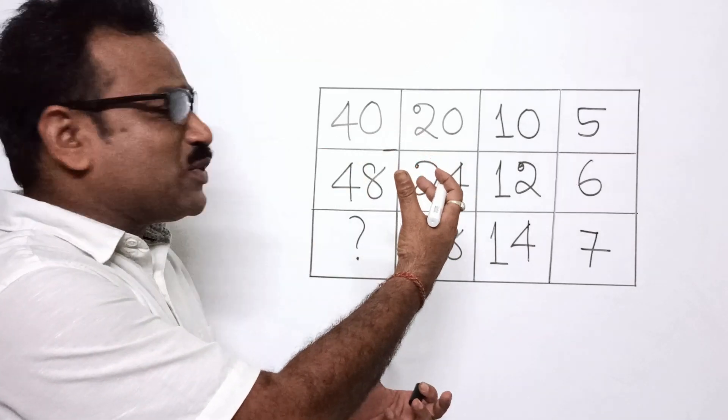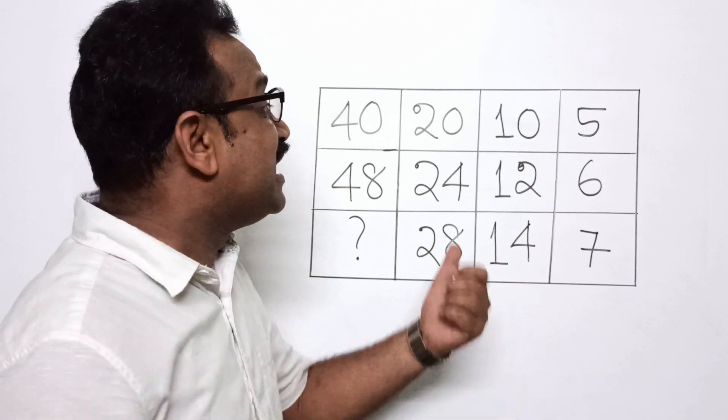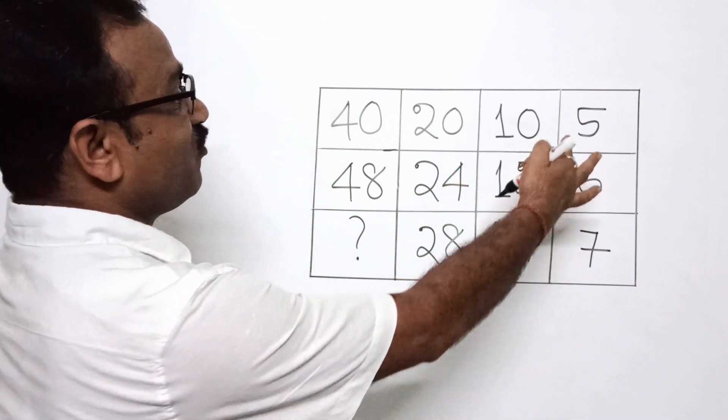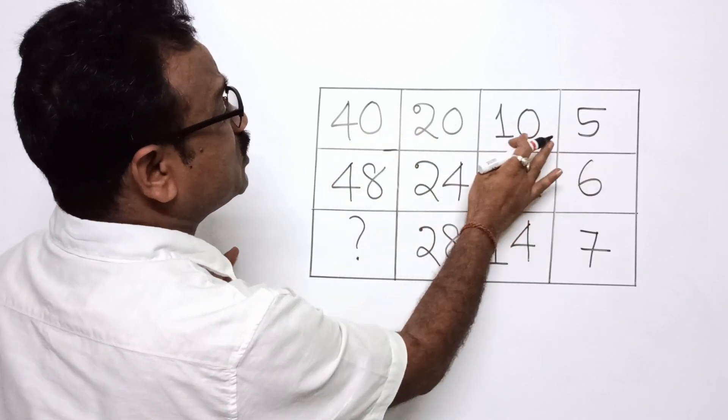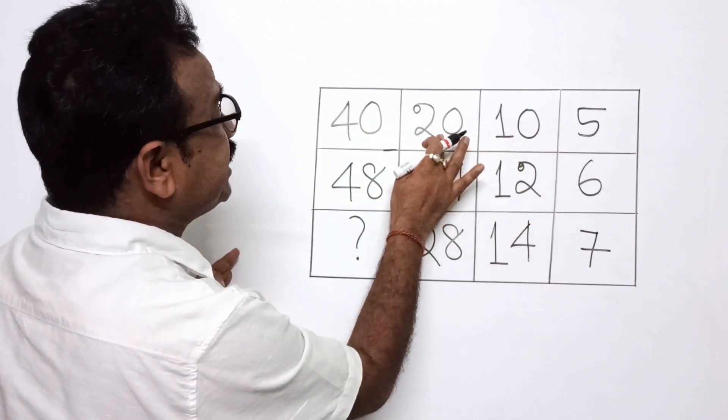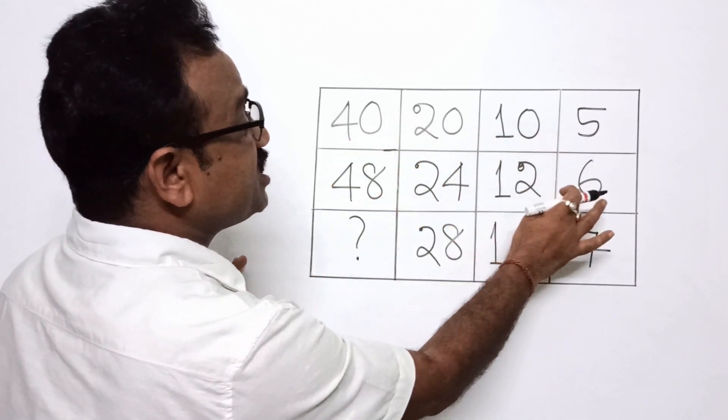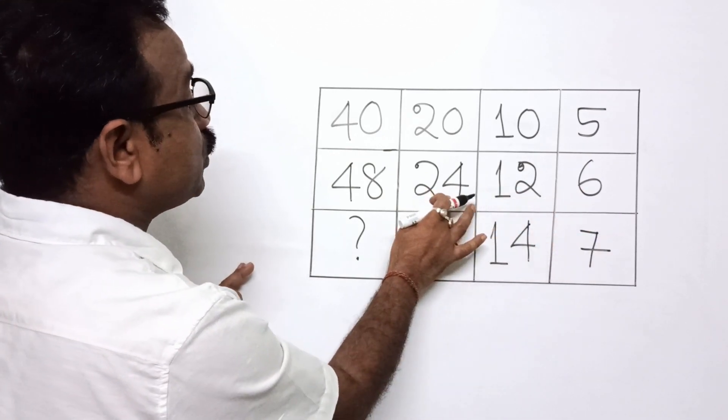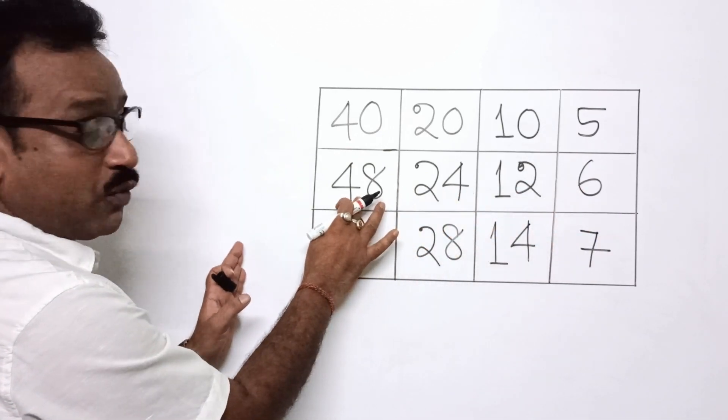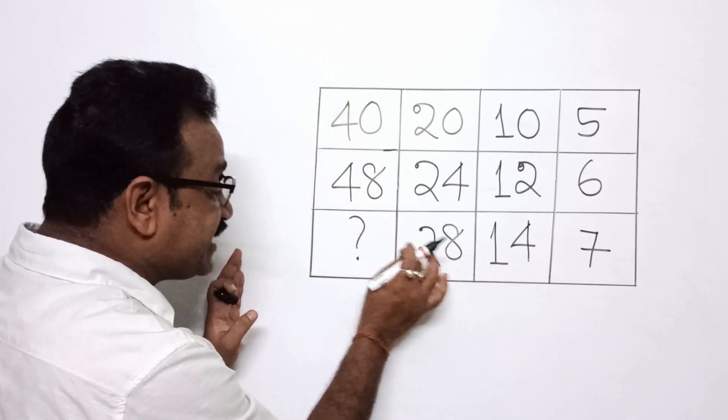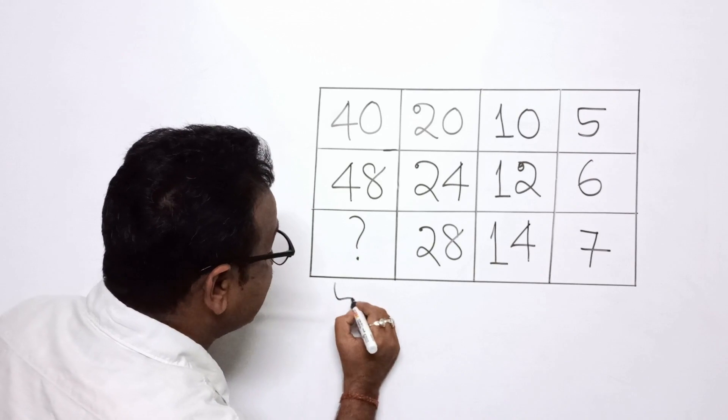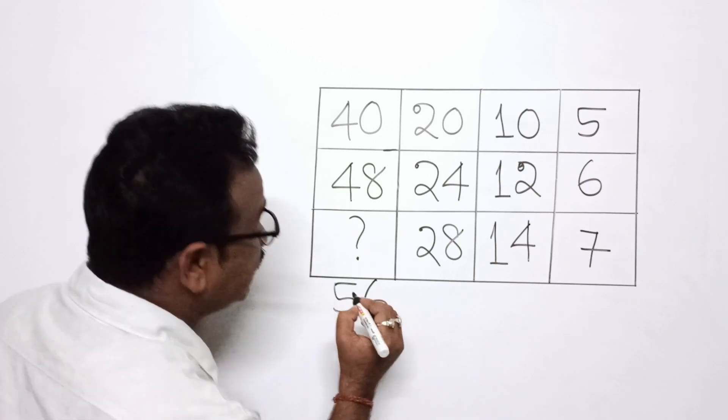So the exact question was displayed on the screen. Let us see the pattern. 5, 10, 20, 40. 5 times 2 is 10, 10 times 2 is 20, 20 times 2 is 40. 6 times 2 is 12, 12 times 2 is 24, 24 times 2 is 48. So here 7 times 2 is 14, 14 times 2 is 28, 28 times 2. So answer is 56.